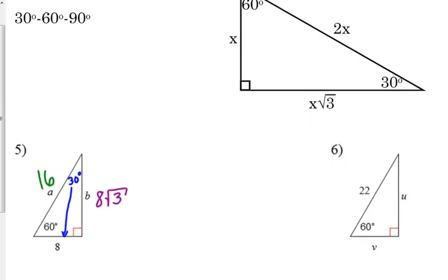For number 6, they give us the hypotenuse, which makes life fairly simple. Half of that length is the leg across from 30, so V is 11. Once I know that, I just stick a square root of 3 on the end of it, giving me U — the side across from 60 degrees — which is 11 square root of 3.